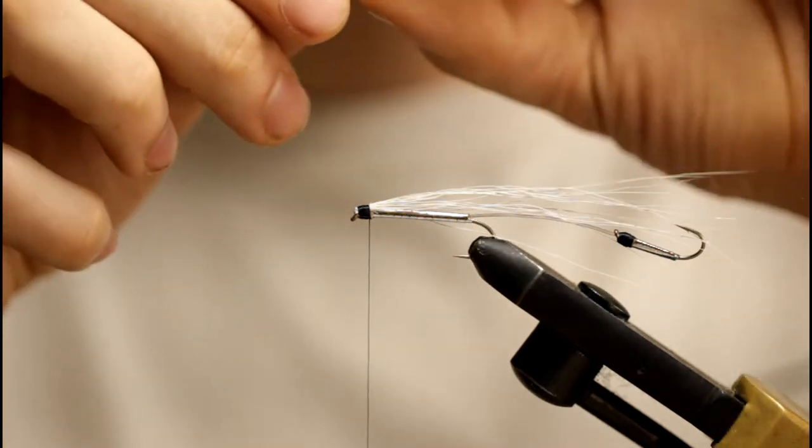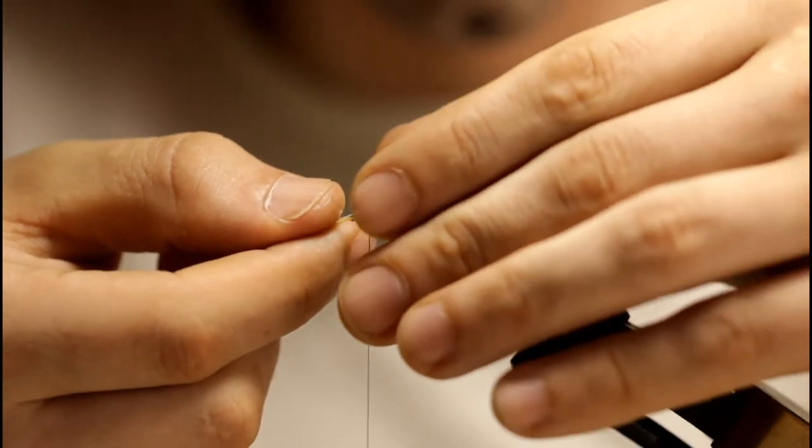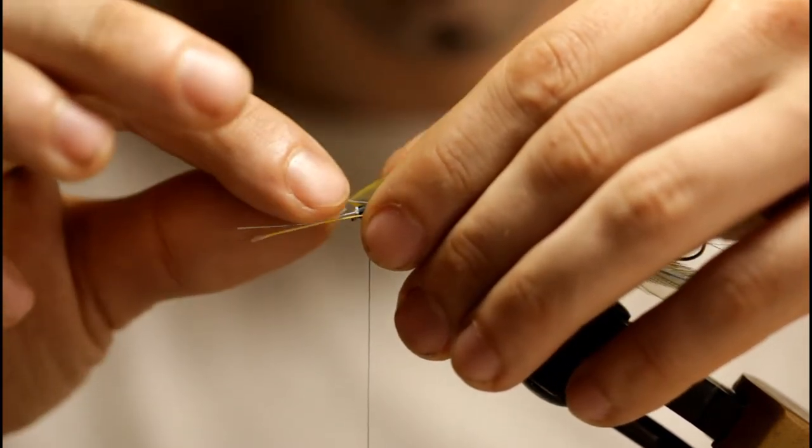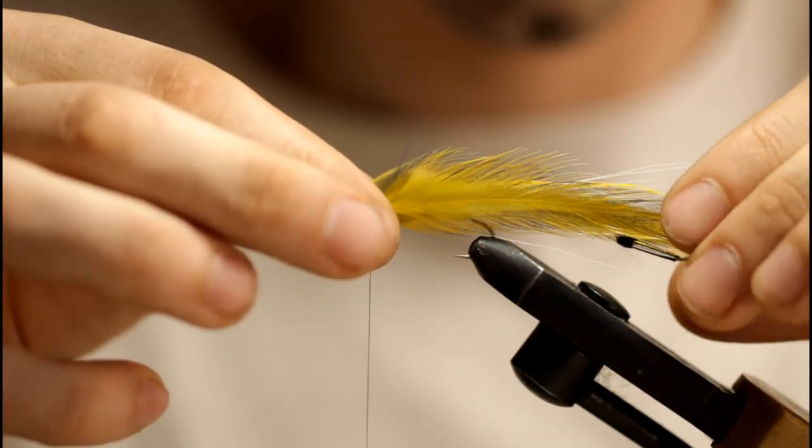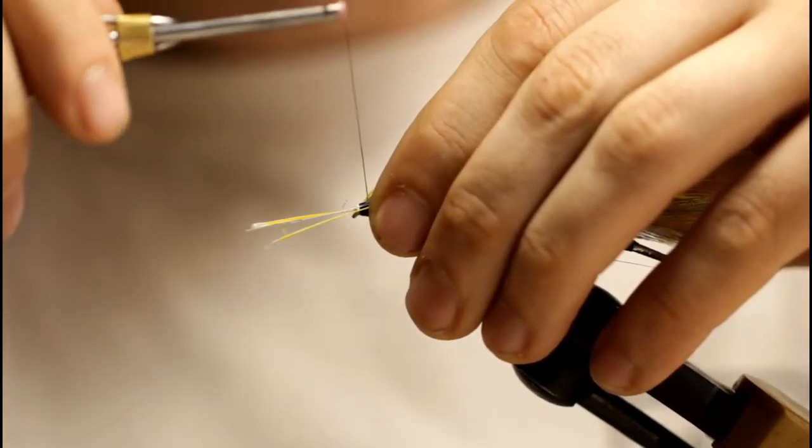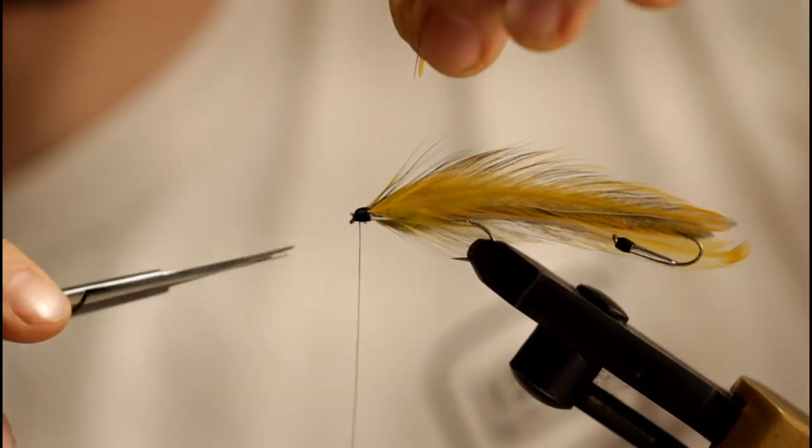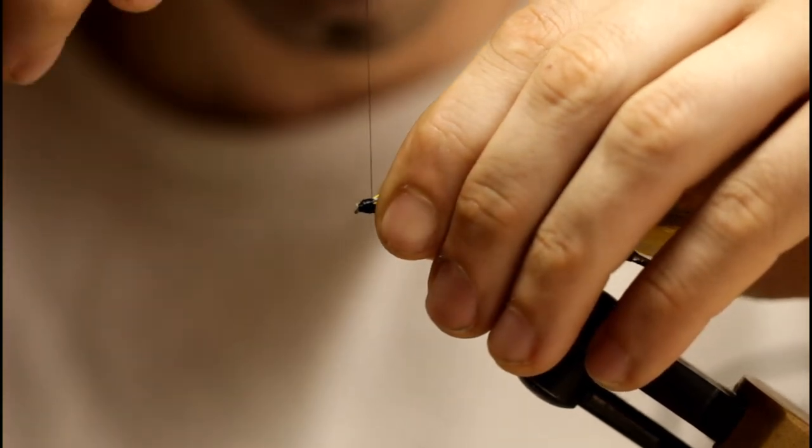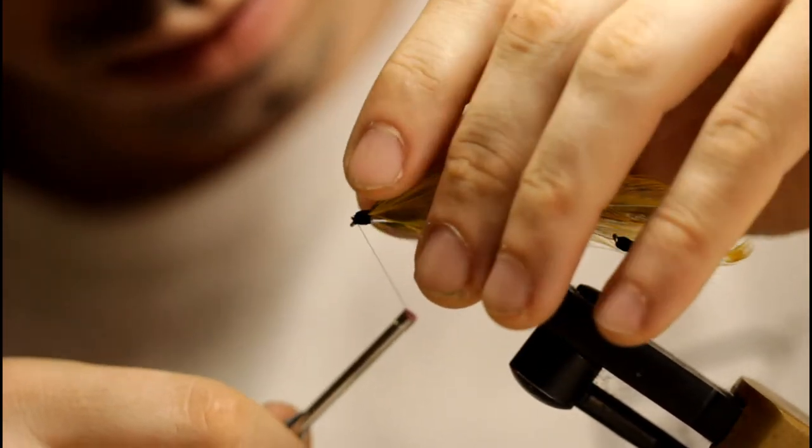All right, so now it's time to tie in. You can tie in one at a time or both at the same time, totally up to you. I'm going to tie in both, make sure they line up and take a few loose wraps, work my way down towards the hook eye and I'm going to snip them off. You can also bend the stems back and tie those in for added security, but I just snipped them off this time.